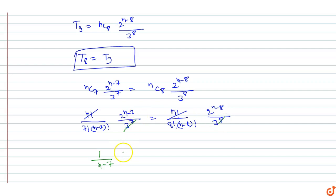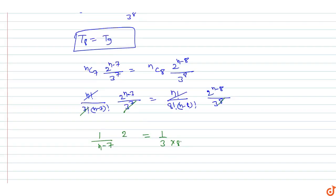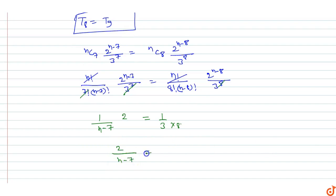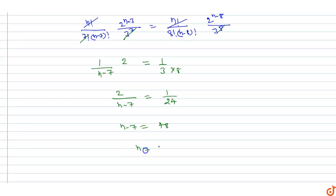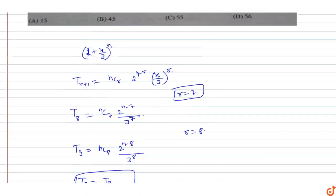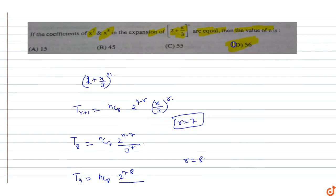After simplification, we get 2 upon (n minus 7) equals 1 upon 24. Therefore, n minus 7 equals 48, so n equals 48 plus 7 which is 55... the value of n equals 55. Wait — if coefficient of x raised to power 7 and x raised to power 8 are equal, then the value of n equals 55, and option D will be the correct option.